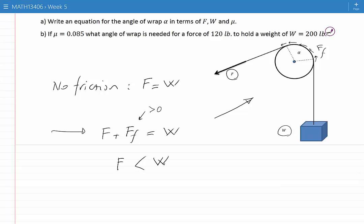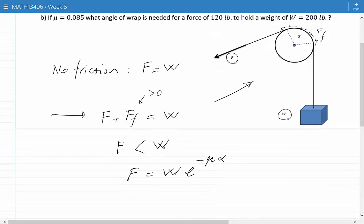Now there are ways to calculate the amount of force F required to keep the weight W in suspending motion, and that has been shown to be W e to the power of minus mu alpha, where alpha is the angle of contact between the rope and the cylinder, and mu is the coefficient of friction.